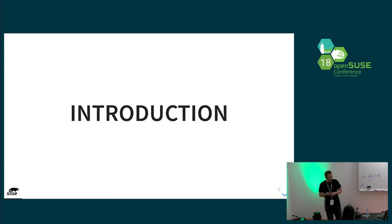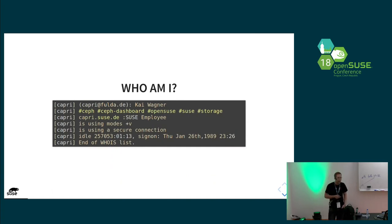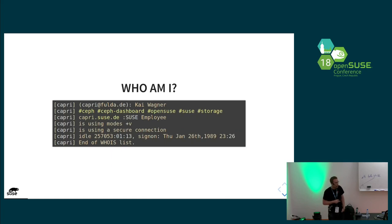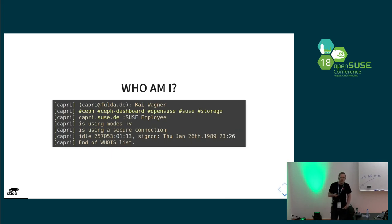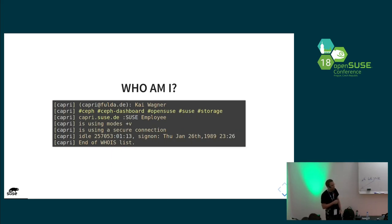Quick introduction about myself. My name was written down in the slides already. I'm Kai, I'm working for SUSE — there's the chameleon in the corner, so that's obvious. I'm working from Fulda, which is in the middle of Hesse, so more or less the middle of Germany. The good thing is it's the same distance to everywhere; the bad thing is it's the same distance to everywhere — it's a really small town. You can reach me on OFTC or Freenode with my nickname listed there.